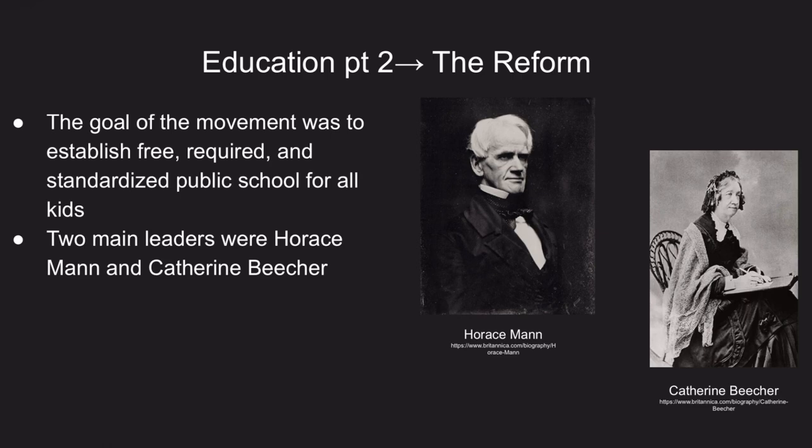The need for reform became especially apparent as the nation continued to expand west and the North became industrialized. The goal of the movement was to establish free, required, and standardized public schools for all kids. This directly attacked the current state of schooling, which only really educated the northern rich. Key figures in this fight were Horace Mann and Catherine Beecher — the daughter of Lyman Beecher, the prominent leader in the Second Great Awakening and temperance movement.